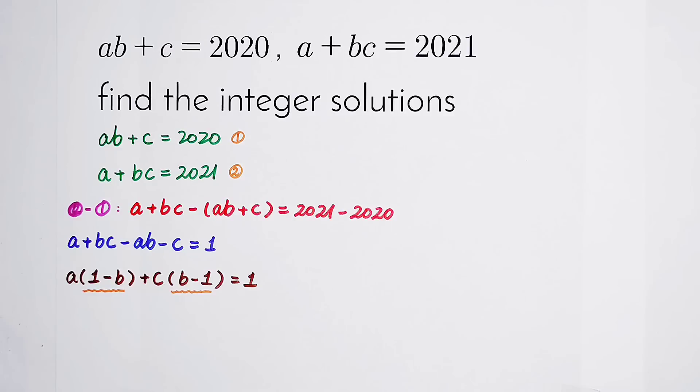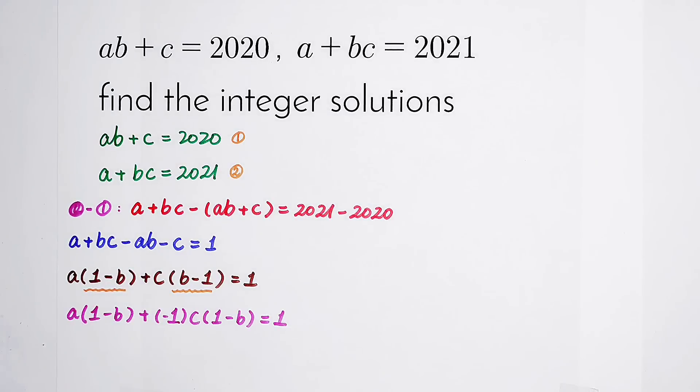So we have to change them into a same term. What should we do? The best idea is to change this B minus 1 into 1 minus B, and then I times minus 1 on this C.